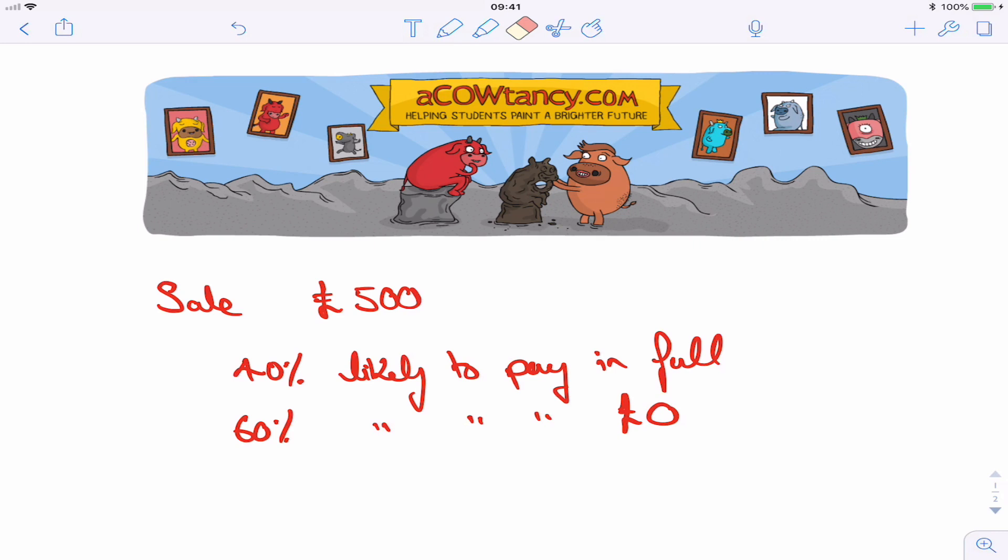So here you've got a sale of 500 to one person, it's 40% likely that they will pay you the full amount, however it's 60% likely they won't pay you anything at all. You put in the most likely amount, which would be in this case, zero.